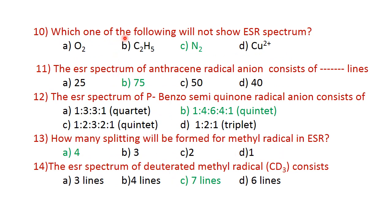Question number 10: which of the following will not give ESR spectra? ESR spectra require one unpaired electron. In O₂ there is an unpaired electron; in C₂H₅ there is an unpaired electron; in N₂ there is an unpaired electron — that molecule should possess an unpaired electron to show ESR spectra.